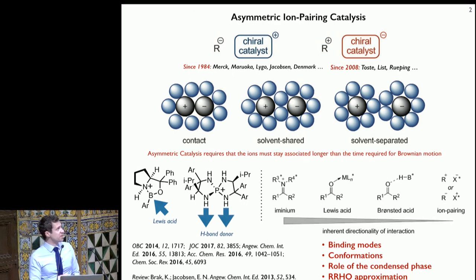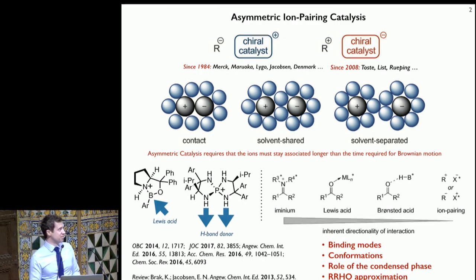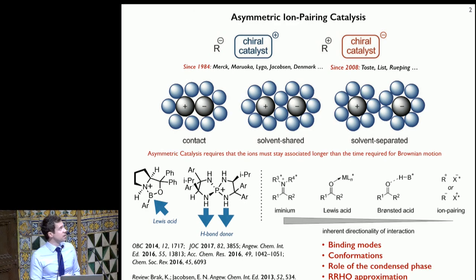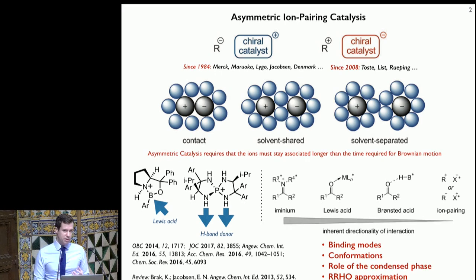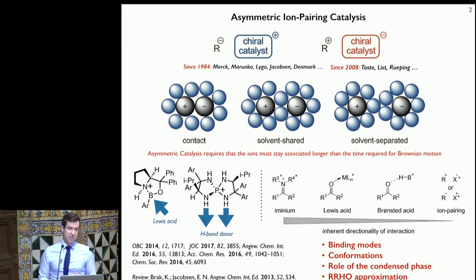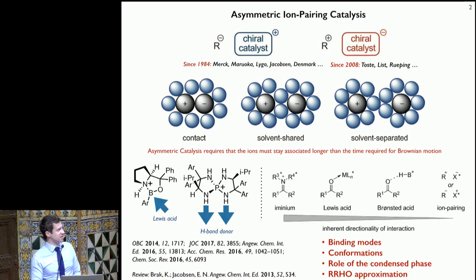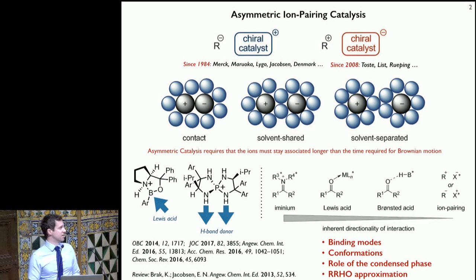What we can think about is that asymmetric catalysis — the induction of stereoselectivity — really requires that we have some form of contact between our intermediate, reagent, and catalyst. We can think about scenarios in which we have what we might call a contact or intimate ion pair, but also there's a spectrum where we can go from contact to a solvent-shared situation where our two ions are still interacting via intermediary solvent molecules. As we move towards solvent separation, we would expect to see a loss of selectivity. Understanding these regimes is important because this is the regime that will logically give us the best chance of selective catalysis.